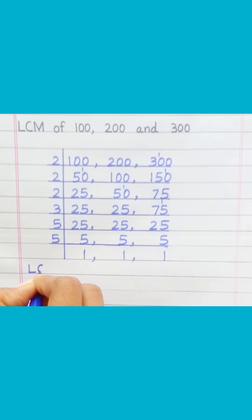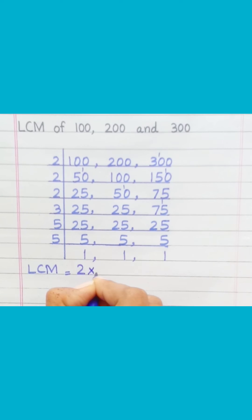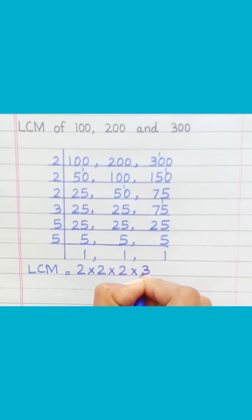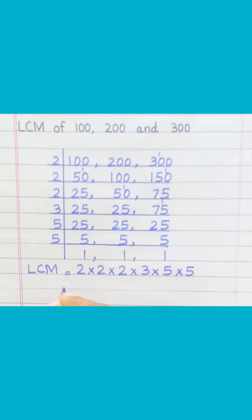LCM equals 2 multiply 2 multiply 2 multiply 3 multiply 5 multiply 5, equal 600.